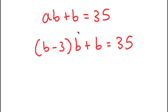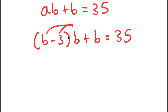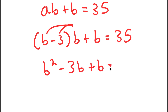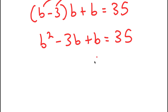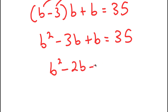So we can solve this. I'm first going to distribute the B. B times B is B squared, and B times negative 3 is negative 3B. I now have B squared minus 3B plus B, which is equal to 35. Negative 3B plus B is negative 2B. Subtracting 35 from both sides gives B squared minus 2B minus 35 equals zero.